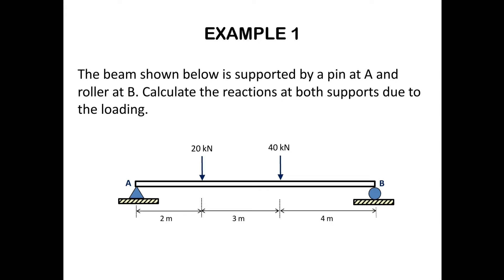To solve this, we first identify the support system for the beam. At point A there is a hinge support, which means it will have two reactions: one in the vertical direction, RAY, and another in the horizontal direction, RAX. At point B there is a roller support, which means it will have only one support reaction in the vertical direction, RBY.